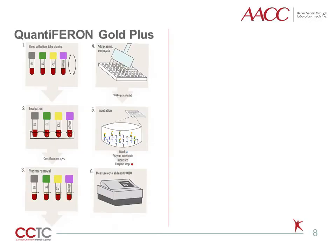While the QuantiFERON and TSPOT.TB assays share the same principle, there are differences in procedure. For the QuantiFERON assay, blood is first drawn from the patient into four QuantiFERON-specific tubes. Two of these tubes, referred to as TB1 and TB2 with green and yellow tops respectively, contain the peptide antigens ESAT-6 and CFP10, designed to stimulate CD4-positive T cells. The TB1 tube also contains an additional set of short peptides designed to stimulate CD8-positive T cells.